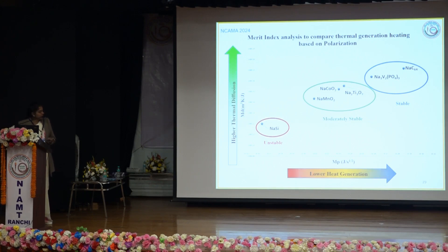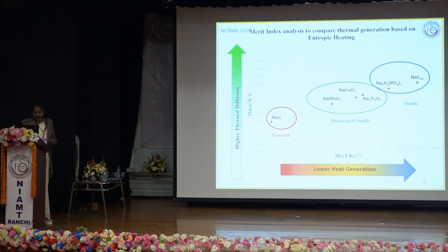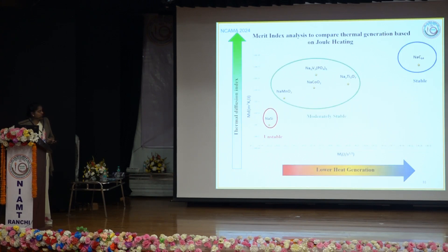Based on polarization, these are the classes of cathode materials. Sodium vanadium phosphate is clustered in the stable region, while the most unstable is the sodium silicon-based material. With respect to entropic heating and joule heating, sodium vanadium phosphate is moderately stable when it comes to joule heating, because the larger ionic radius of sodium contributes significantly to resistance heating.